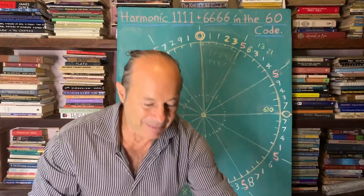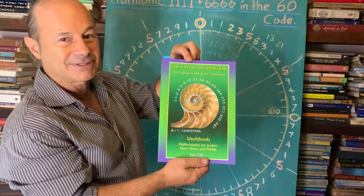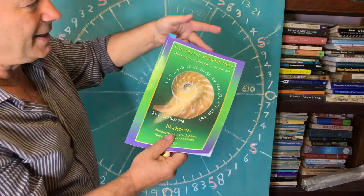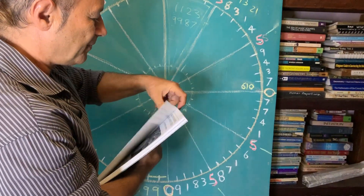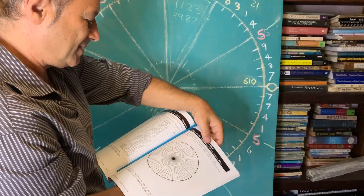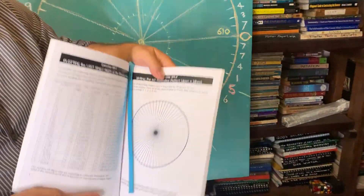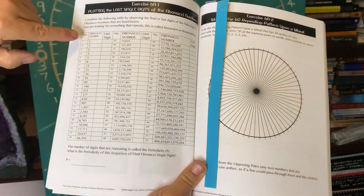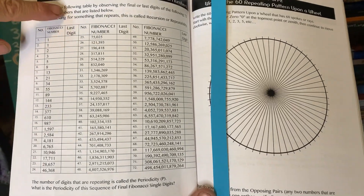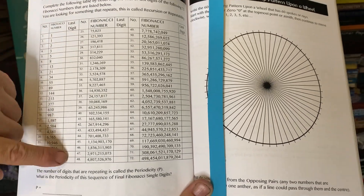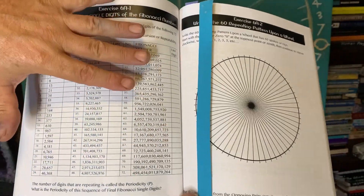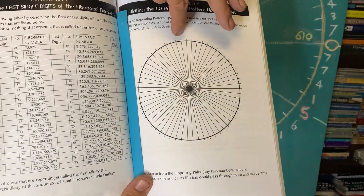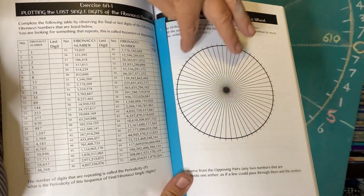I published this in one of my most favourite books, it's called The Divine Proportion — it's actually a workbook. In this workbook, for teenagers or any ages, we've got all the Fibonacci numbers and we get them to write down the final digits in a table. Then we're going to put all those 60 digits, starting from 0, around this clock.